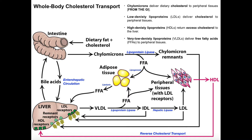The transport of cholesterol and other lipids differs from that of amino acids and sugars because sugars and amino acids are hydrophilic molecules — they're polar and/or charged, and so they are soluble in the blood and can very easily be moved. In contrast, lipids such as triglycerides and cholesterol are insoluble — they're hydrophobic molecules and so they require special handling.